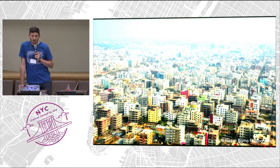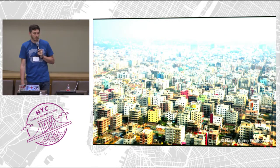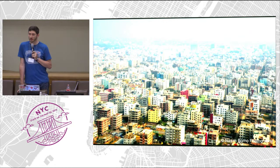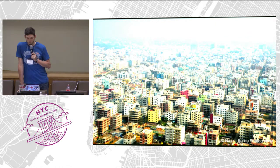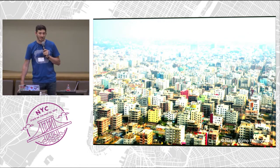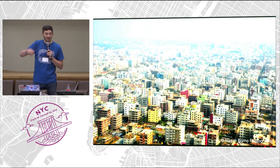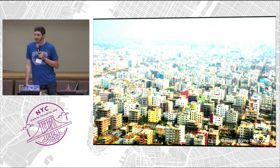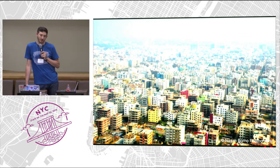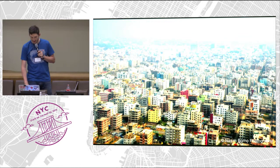Dhaka is the densest city in the world. If you think New York is dense — New York is about 10,000 people per square kilometer — Dhaka is 43,000 people per square kilometer. A building there that's six stories tall will have 18 different land uses and 30 different stores. It's absolutely amazing.